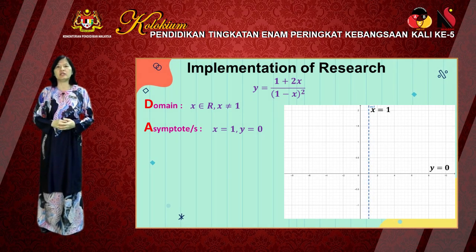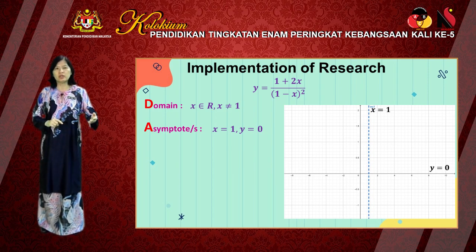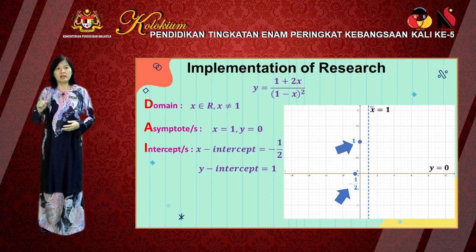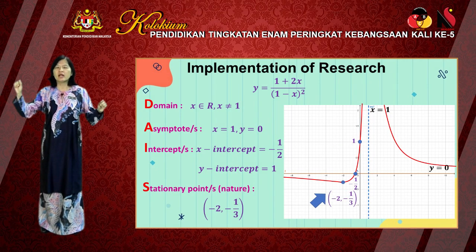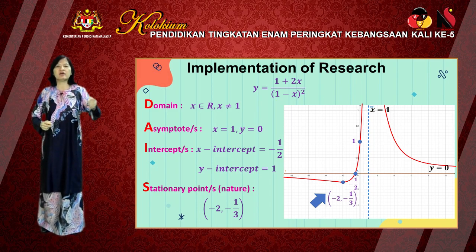Next is the letter I for intercept. Students need to determine whether there is any x-intercept and y-intercept in order to know whether the curve cuts the axes. The intercepts are then marked immediately on the graph as shown here. Finally, the letter S is for stationary point. Again, students need to determine whether there is any stationary point. If there is, they need to determine its nature. In this question, there is a stationary point, so the stationary point is marked and labelled immediately. With all this information, we can start to sketch our curve — connecting all the points and sketching the graph along the asymptote. As the domain consists of all real values, there is another curve on the right-hand side. This is the final sketch for the function.